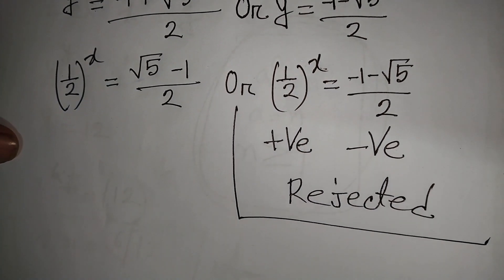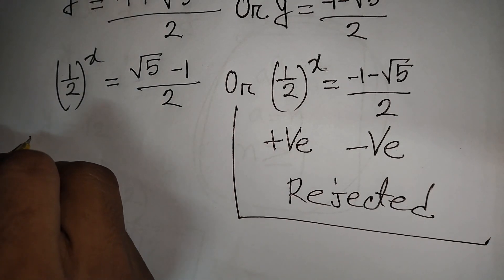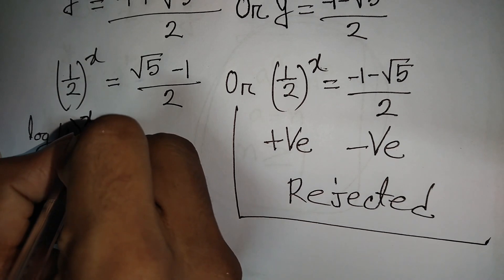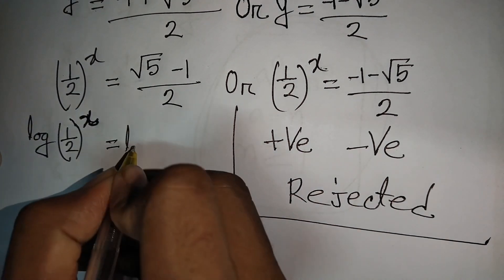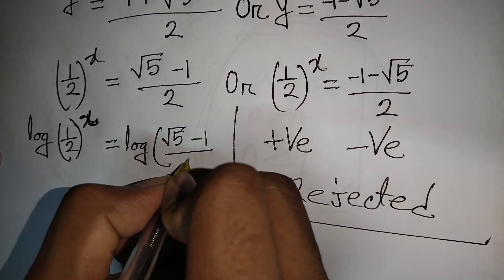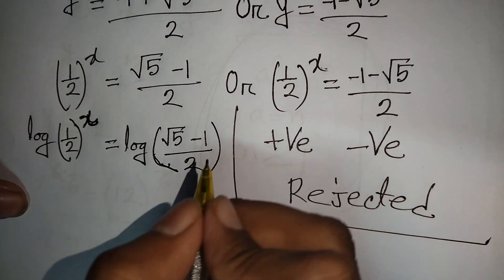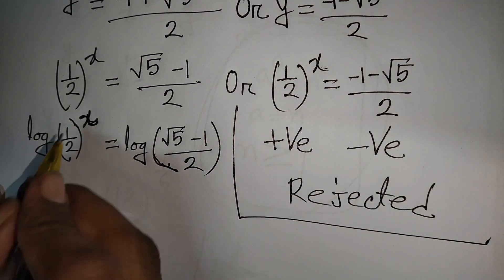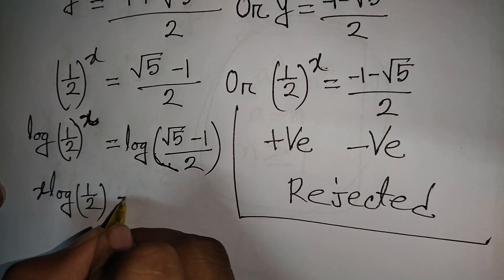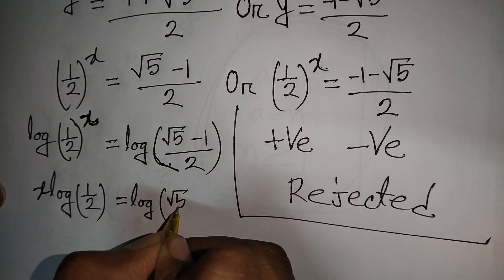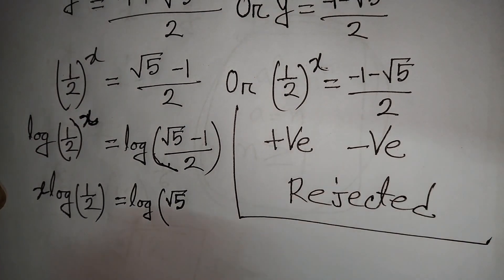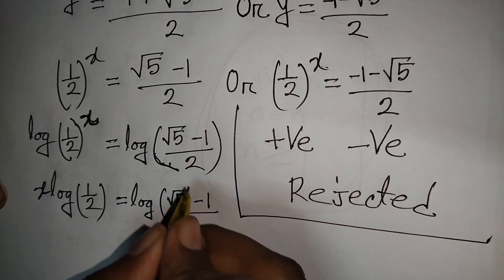For the valid case, we take log of both sides: log of (1/2) to the power x equals log of (root 5 minus 1) over 2. The power x moves to the front, giving x times log(1/2) equals log of (root 5 minus 1) over 2.